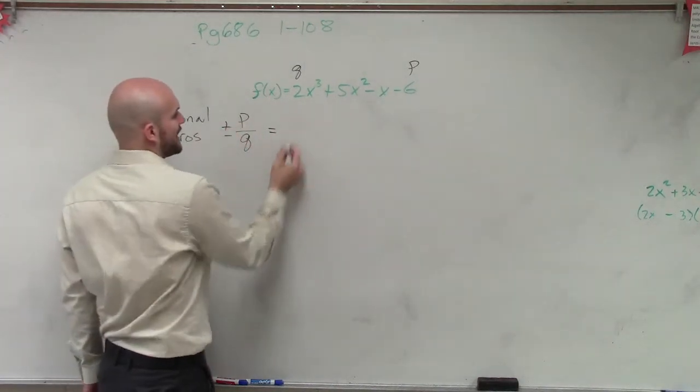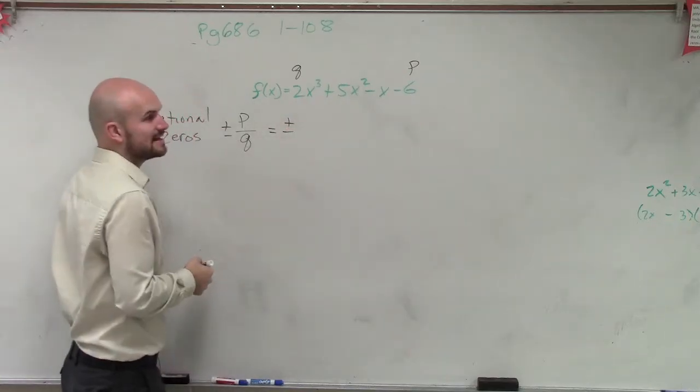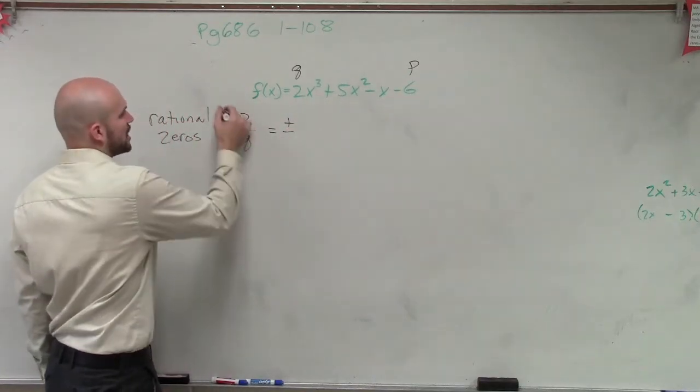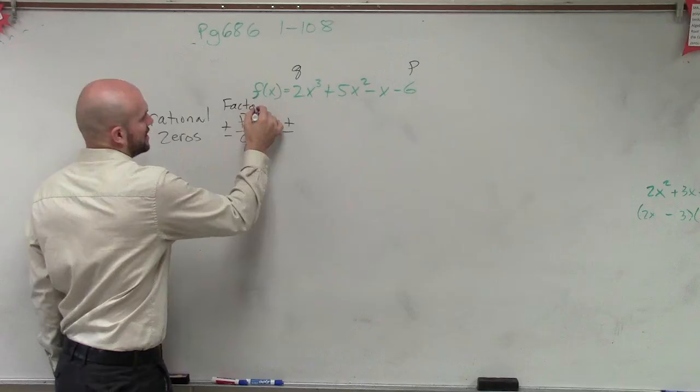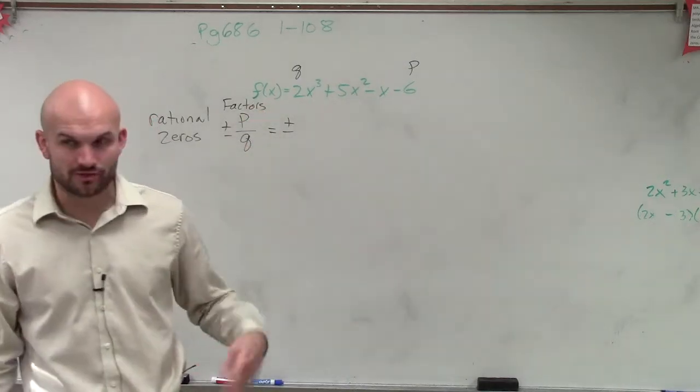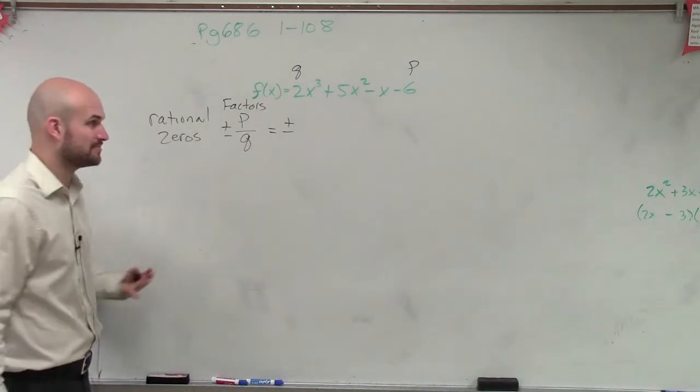So therefore, I simply have plus or minus. Now what I'm going to do, I'm sorry, rational zeros are the factors of p over q. It's not just p over q. It's all the factors of p over q.